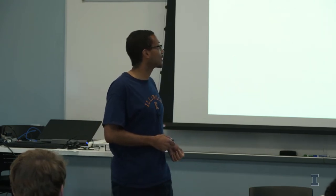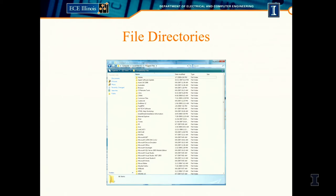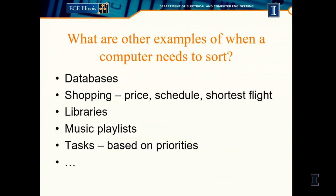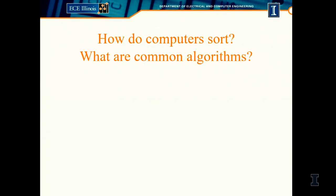What are examples of things that computers need to sort? Your file directories, your Google search results, websites, databases, and so forth. There are many things that computers will sort.